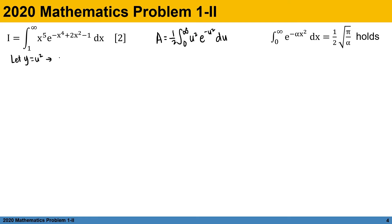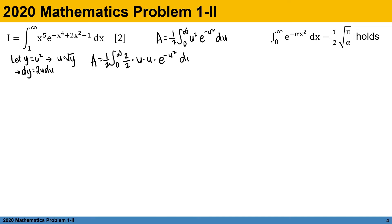From here, dy equals 2u du. We express A as one half of the integral from 0 to infinity of 2 over 2 times u times u times e to the negative u squared du. We extract 2u and du to become dy, substitute square root of y for the remaining single power of u, and substitute y for u squared.